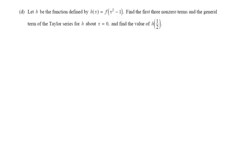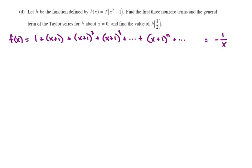So f(x) is 1 + (x+1) + (x+1)² + (x+1)³, etc., which is (x+1)^n as the general term, and we know that converges to -1/x within the interval of convergence.